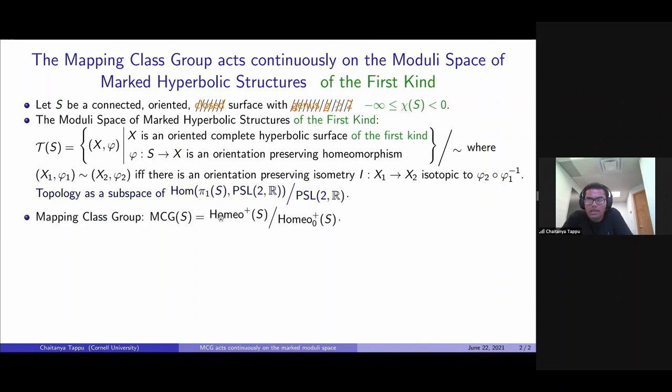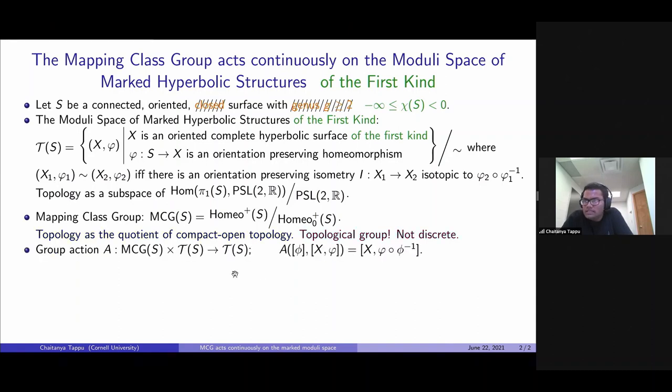What about the mapping class group now? For infinite type surfaces, this is no longer a discrete space. It's a topological group now. So the first order of business is to check the continuity of this MCG action. And that is indeed true. I could prove that the action function A is continuous. So that's my theorem.